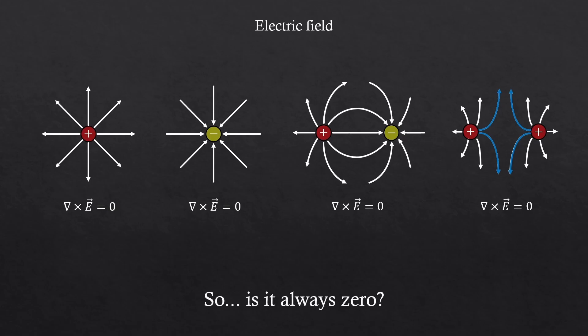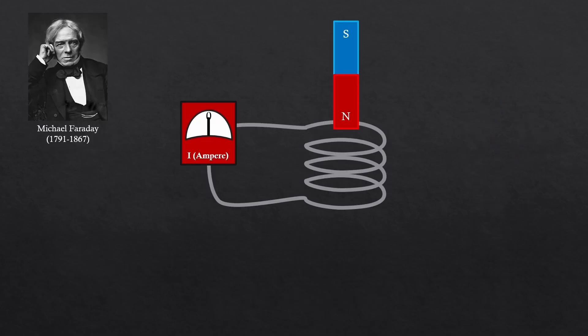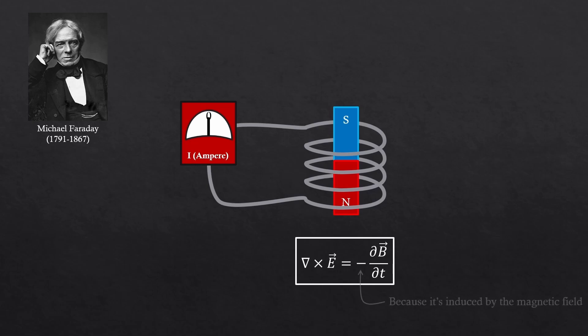But is the curl of an electric field always zero then? Faraday discovered that when a magnetic field is present, it can induce an electric field that curls around it. Here's an important thing though. Watch this. As you can see, to be more precise, it actually takes a time-varying magnetic field to create an electric field. So the curl of E does exist when there's a magnetic field that is changing. And here we have a negative sign, because this curling electric field is induced by the magnetic field.